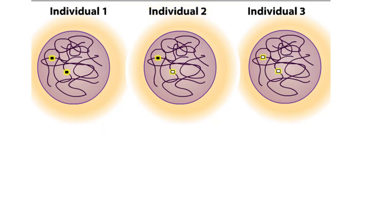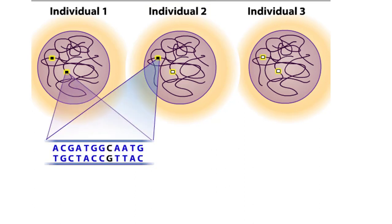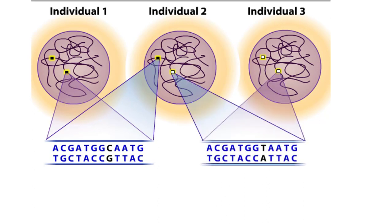Let's say that the sequences differ by a single nucleotide. In one sequence, a C exists in a particular position, and in the other sequence, the C is replaced by a T. This difference is a single nucleotide polymorphism, or SNP, which is pronounced "snip".